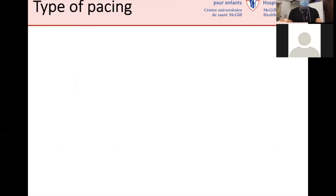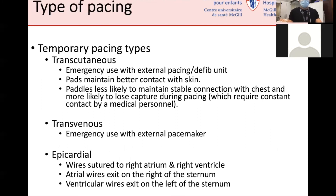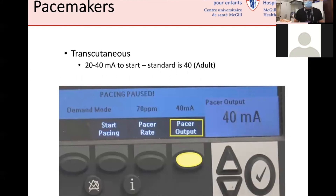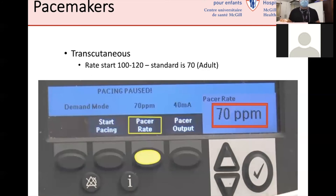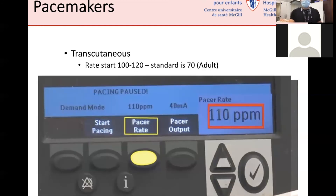Types of pacing include transcutaneous, transvenous, epicardial, and via the esophagus. Today we focus on transcutaneous pacing. Key parameters: the target heart rate, the output in milliamps, and then you start pacing. Typically we aim for 20 to 40 milliamps of output and a rate of 100 to 120 beats per minute for babies — the adult standard is 70, but for neonates we aim around 100 per minute.